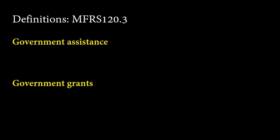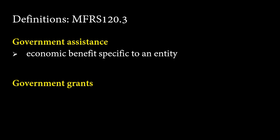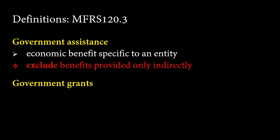Government assistance is action by government designed to provide an economic benefit specific to an entity or range of entities qualifying under certain criteria. The assistance for the purpose of this standard does not include benefits provided only indirectly through action affecting general trading conditions, such as the provision of infrastructure in development areas or by the imposition of trading constraints on competitors. In other words, the government assistance that applies to this standard is that which is directly provided and specific to an entity.